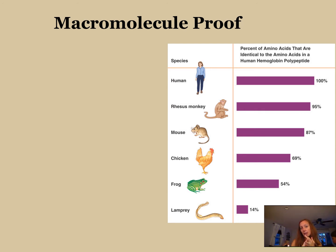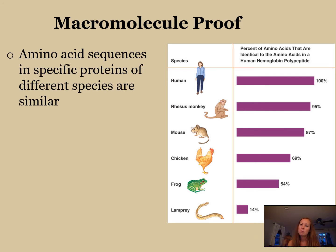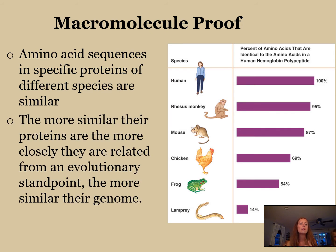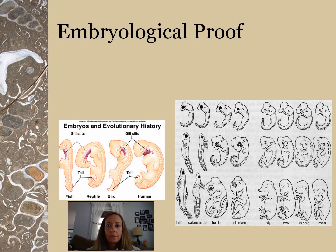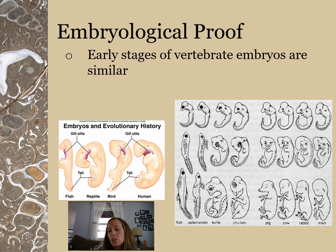Now we're at M for macromolecular proof. We look at the amino acid sequences in specific proteins of different species and see if they're similar. The more similar the proteins are, the more closely the species are related. For example, humans share 95% of this protein's amino acid sequence with the rhesus monkey — this is the hemoglobin protein. From the picture, the lamprey is the one we're least related to, whereas the rhesus monkey is most closely related.